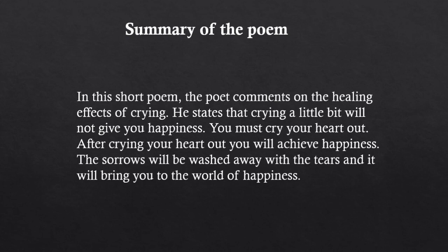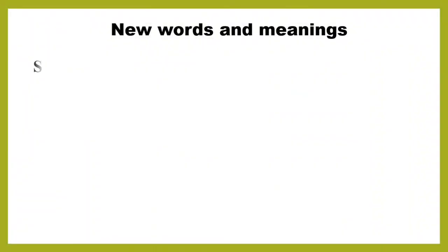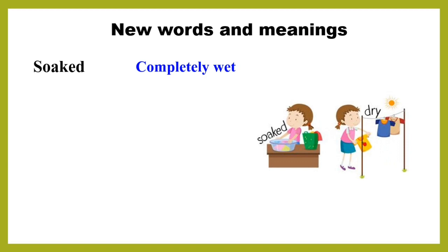The first vocabulary word is soaked — S-O-A-K-E-D — pronounced 'soaked', meaning completely wet. You can see in the picture a girl getting wet, and then the same girl is drying the soaked clothes in the sun. A sample sentence: Shalu is drying the soaked clothes. You can frame more sentences using this word.